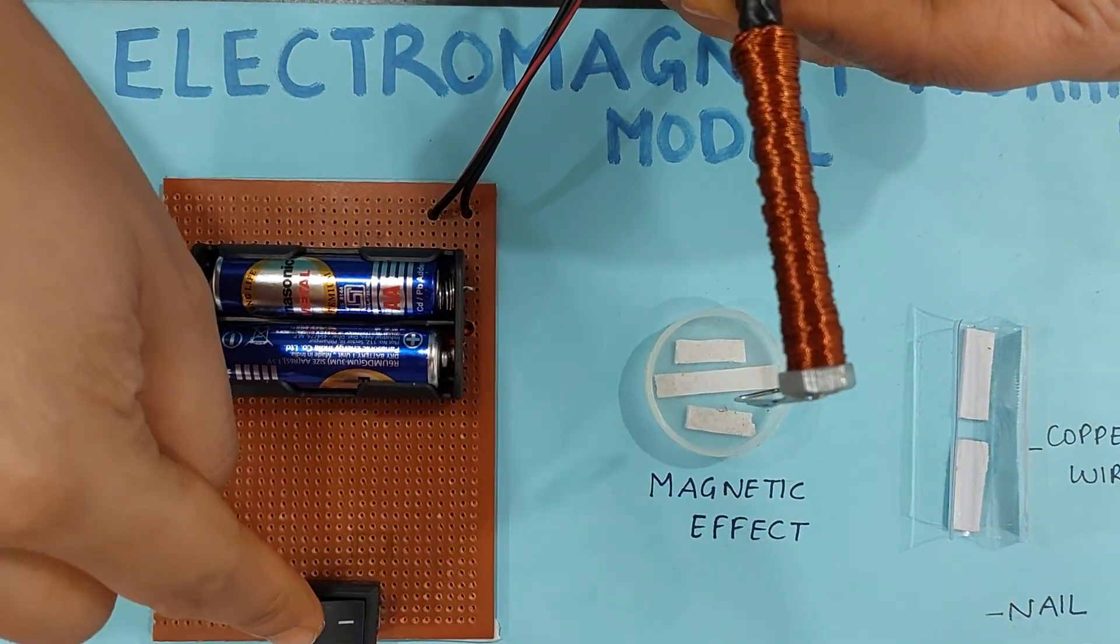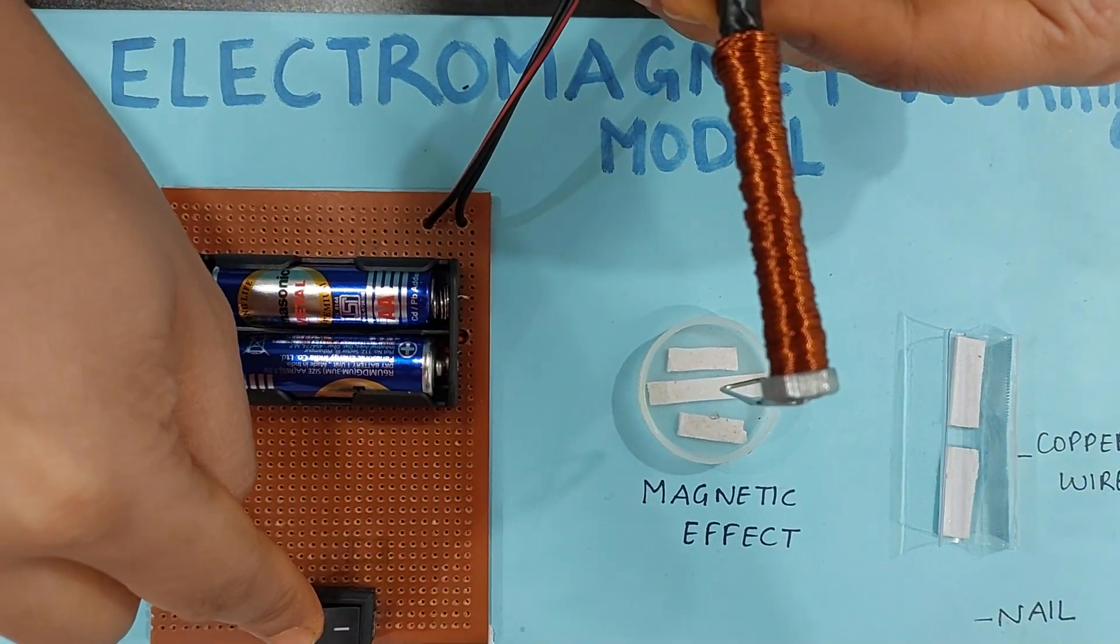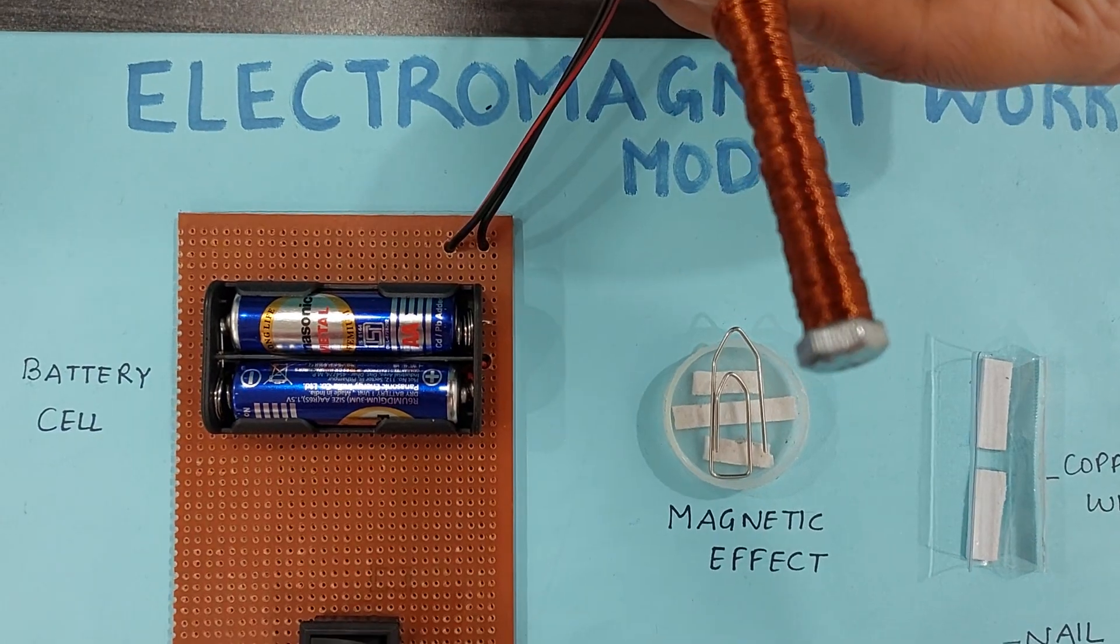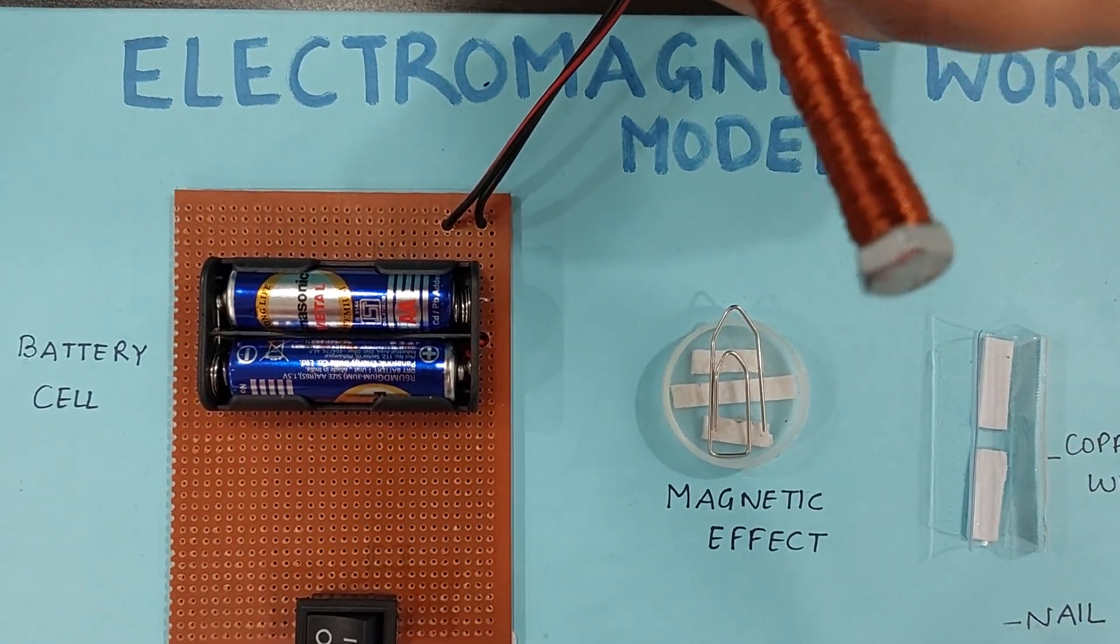Now as soon as I will switch it off, you can see what happens. You can see now this iron nail is no longer a magnet.